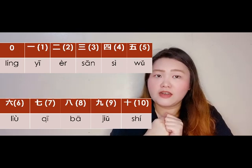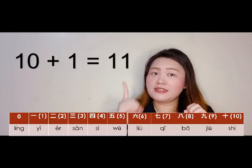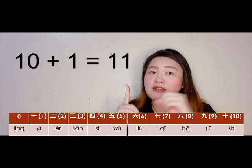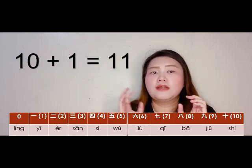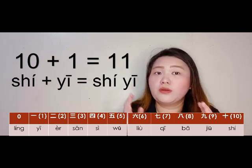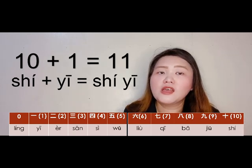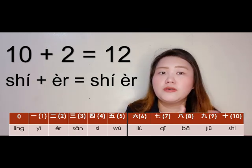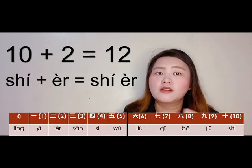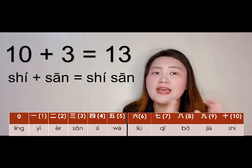So that is 0 to 10. How about 11? We say 11 as 10 plus 1 — 十一 (shíyī). Then 12 is 10 plus 2 — 十二 (shíèr). Then 13 is 10 plus 3 — 十三 (shísān).